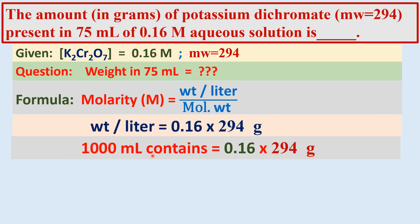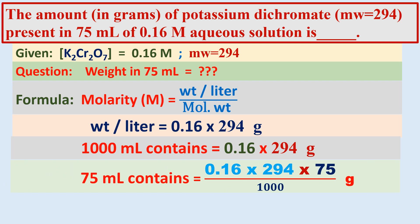1 liter is equal to 1000 ml, so 1000 ml contains this much gram. Now let us find out 1 ml — therefore, 1 ml contains 0.16 into 294 divided by 1000. Therefore, 750 ml contains that value multiplied by 750.